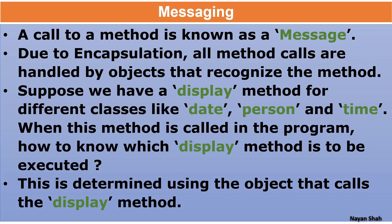The third feature is messaging. Messaging is a very simple thing. You create a method, and when you call that method to get executed, that is called messaging. You create a function - suppose somebody created some function in Excel, and when we use that function, that is a call to that function. So that is called messaging. A call to a method or function is known as a message. Due to encapsulation, all method calls are handled by the object that recognizes the method.